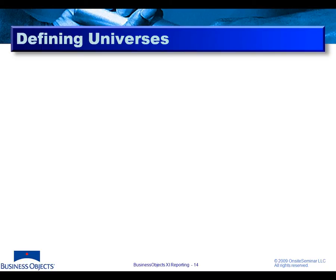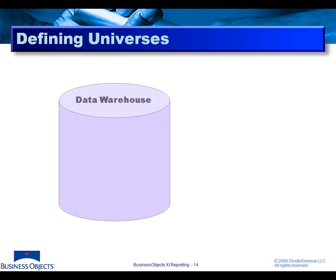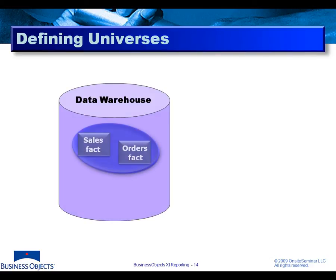When we're talking about warehouses, we have to be aware of two distinctly different types of data that might exist in a warehouse itself. These are basic warehousing terms and concepts. One is the concept of a fact — what's called a fact table.